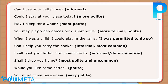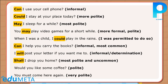Sentences using models of permission and offer: Can I use your cell phone? — informal. Could I stay at your place today? — more polite. May I sleep for a while? — most polite. You may play video games for a short while — more formal, polite. When I was a child, I could play in the rains — I was permitted to do so. Can I help you carry the books? — informal, most common. I will post your letter if you want me to — informal, determination. Shall I drop you home? — most polite and uncommon.